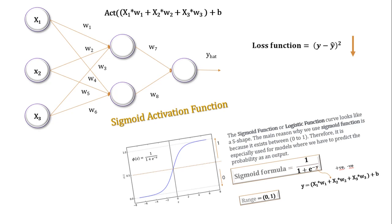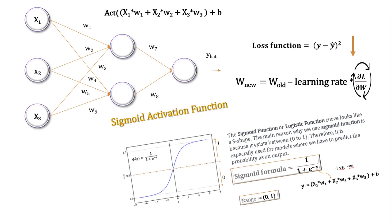If you don't know about backpropagation, I suggest you pause this video and watch my video on backpropagation — I've shared the link in the description. So when we backpropagate the loss function, we basically update the weights, and the weight update formula is: w_new = w_old minus learning rate multiplied by the derivative of the loss function with respect to all the weights. Our focus will be on this derivative of the loss function, and we will see how it creates the vanishing gradient problem.